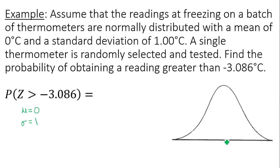In the middle, I have my mean of zero. My goal is to find the probability—in other words, the area under the curve, which represents probability—that a data value is greater than negative 3.086. Does negative 3.086 lie to the left or right of zero?